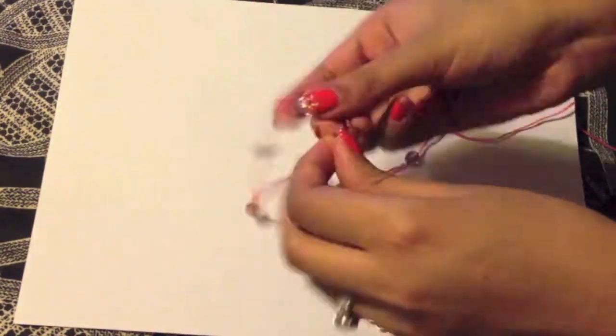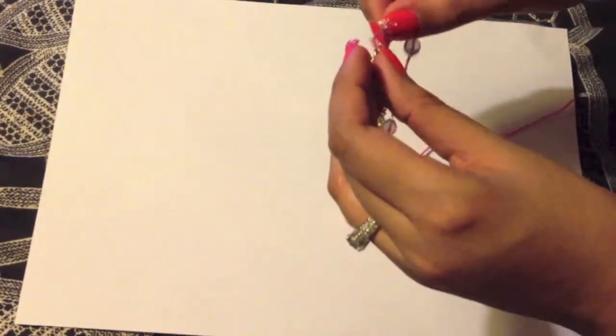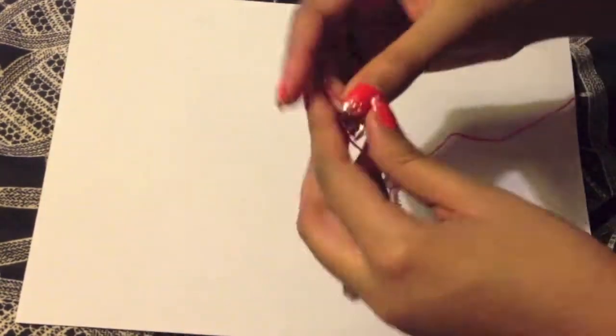Once you have added on all your beads onto your four threads, you want to tie it onto your chain. The chain is 25 centimeters long.